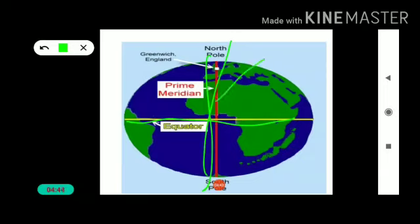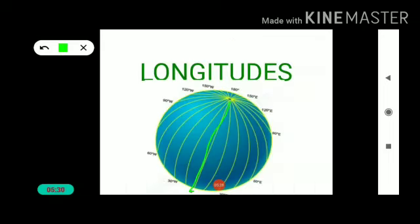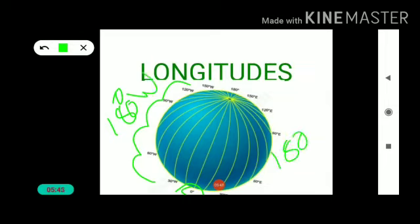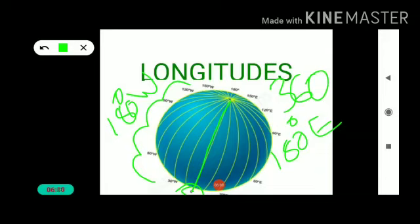The value of the prime meridian is zero degrees longitude. From it we count 180 degrees eastward as well as 180 degrees westward. Here you can see zero degrees — 180 degree longitudes are to the westward and 180 degrees to the eastward. On both sides of the prime meridian there are 180 eastward and 180 degrees westward longitudes, giving a total of 360 degrees.